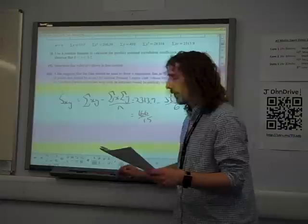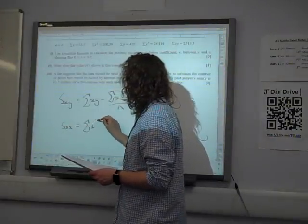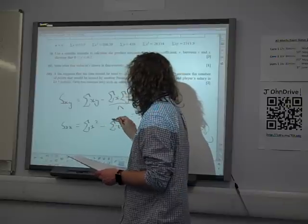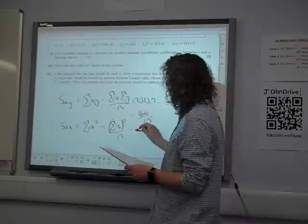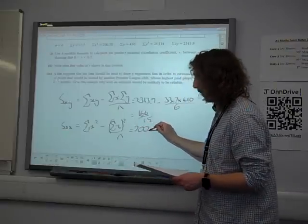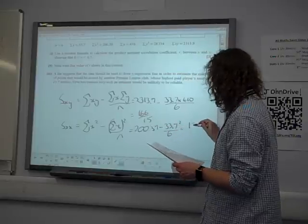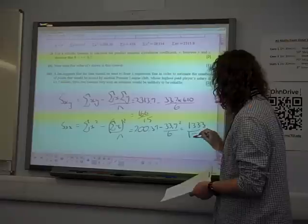We then also have SXX to work out. Sigma X squared minus sigma X squared over N. That gives you 200.39 minus 33.7 squared over 6, which is 1333 over 120.